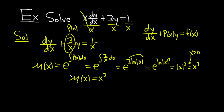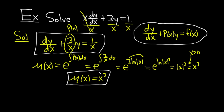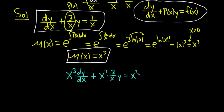So x cubed is our integrating factor. Now we're going to multiply our differential equation — the one written in the correct form — by x cubed. So we get x cubed times dy/dx plus x cubed times 3 over x times y equals x cubed times 1 over x.